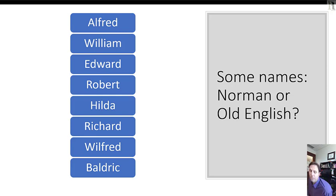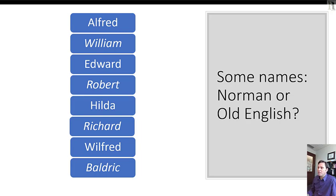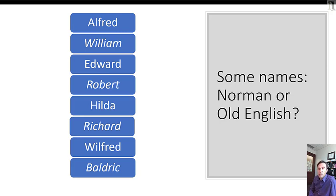Here's a fun little game — a game time segment in our lecture. Let's play Norman or Old English. Here's a series of names that are, or have been, common in England: Alfred, William, Edward, Robert, Hilda, Richard, Wilfred, and Baldrick. Which of these names are from Old English sources, and which are from Norman? The ones in italics are Norman names: William (or Guillaume), Robert, Richard, and Baldrick — which is not a very common name anymore; maybe you're a Blackadder fan. The others are Old English. Baldrick is actually Germanic in origin even though it comes from the French-speaking Normans, because the Normans themselves were a Germanic people.